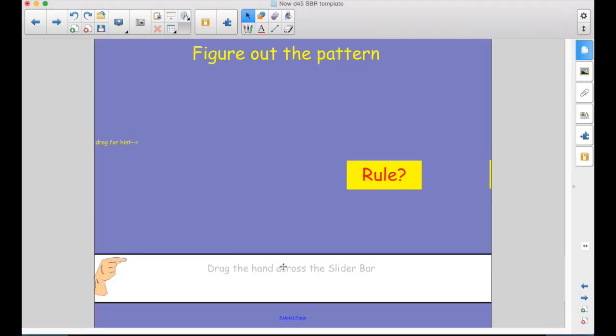Figure out the pattern. Drag the hand across this slider bar. So there's the first clue, three. So how is this working? How are these appearing? Now if you need a hint, it says drag here for a hint. So I'll drag that.